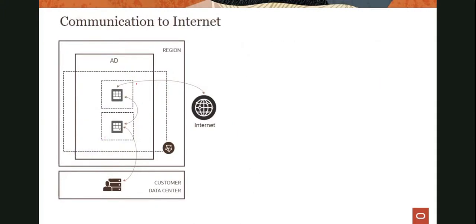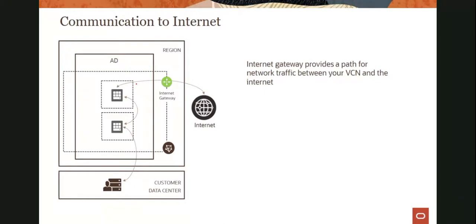Let's look at the communication patterns. The first scenario is communication to the Internet. Let's say you are running a web server or a load balancer — so in OCI, there's a gateway called an Internet gateway. It provides a path for network traffic between your VCN and the Internet and it's bidirectional, so traffic can go out and people on the Internet can discover and access it. This is a public-facing resource, so you would put it in a public subnet, sometimes also called a DMZ.